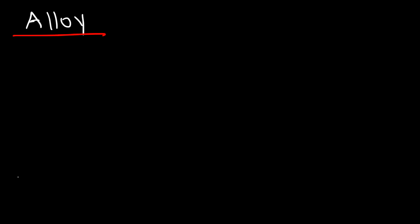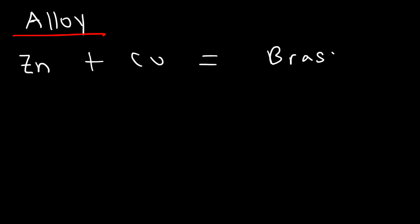In this video I want to talk about alloys. What is an alloy? An alloy is a mixture of two or more metals. For instance, if we mix zinc with copper metal we can get the alloy known as brass. Zinc has a melting point of 420 degrees Celsius and copper is 1086. So what do you think the melting point of brass would be?